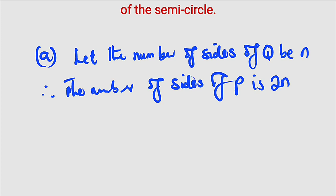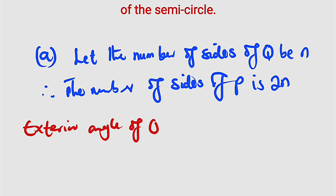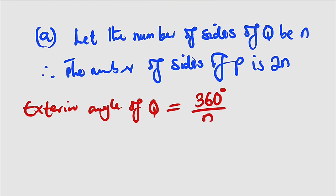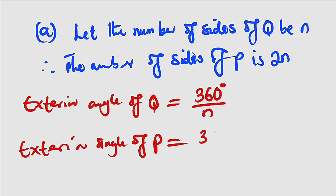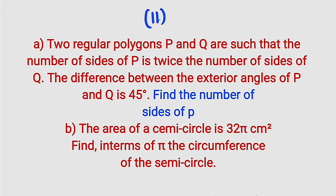To find the exterior angle of any regular polygon, all you have to do is take 360 degrees and divide it by the total number of sides. So the exterior angle of Q is equal to 360 degrees divided by n. And the exterior angle of P is equal to 360 degrees divided by 2n, which can be reduced to 180 degrees divided by n.